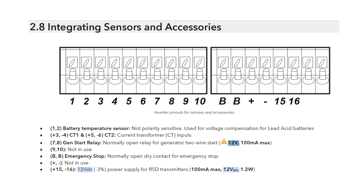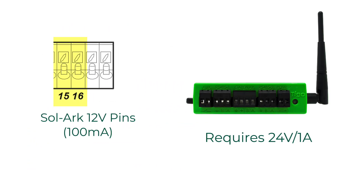The CCA requires a 24-volt, 1-amp power supply. Again, the internal Solark 12-volt pins are insufficient.